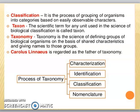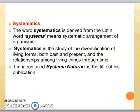Next we have systematics. Systematics is derived from a Latin word 'systema', which means systematic arrangements of organisms. Systematics is a study in which we learn about living forms in the past and present, and learn about their relationships. Linnaeus wrote 'Systema Naturae' in which he defined all the rules. Today we studied binomial nomenclature, taxonomy, and systematics. Next, we will learn about systematic characters. Thank you.